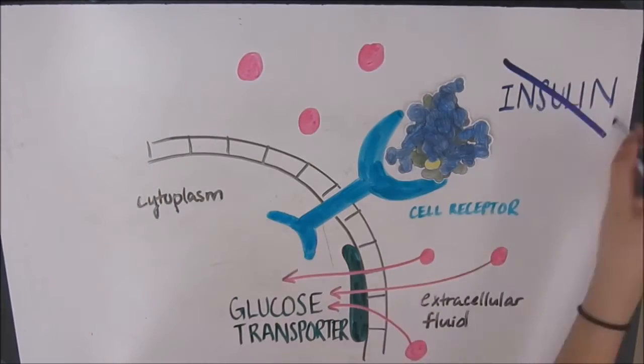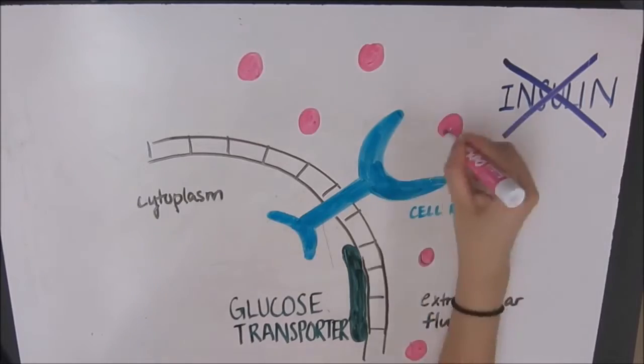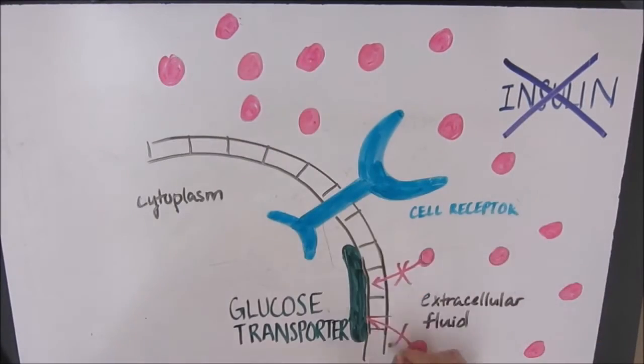When the body does not produce insulin or if the cells are resistant to insulin, glucose cannot be converted to energy by cells and blood glucose levels take longer to return to homeostasis.